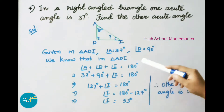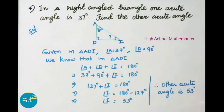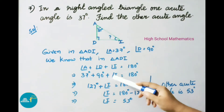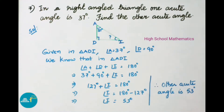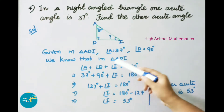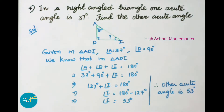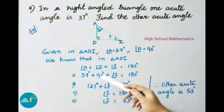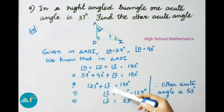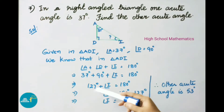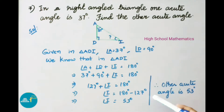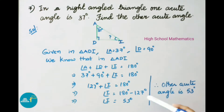We know that in triangle ADI, the sum of interior angles is 180 degrees. So angle A plus angle D plus angle I equals 180 degrees: 37 degrees plus 90 degrees plus angle I equals 180 degrees. That gives 127 degrees plus angle I equals 180 degrees, so angle I equals 180 minus 127, which is 53 degrees. Therefore the other acute angle is 53 degrees.